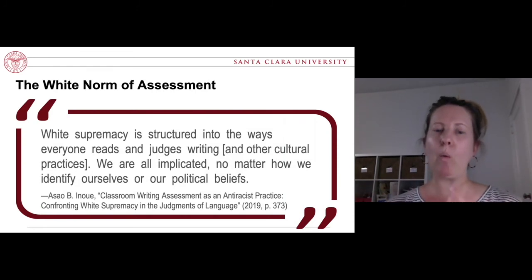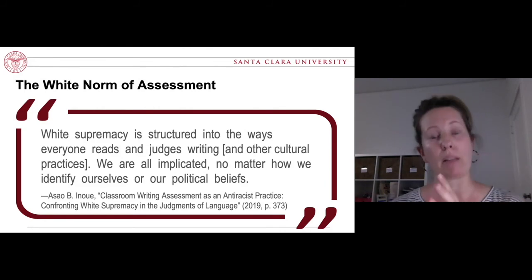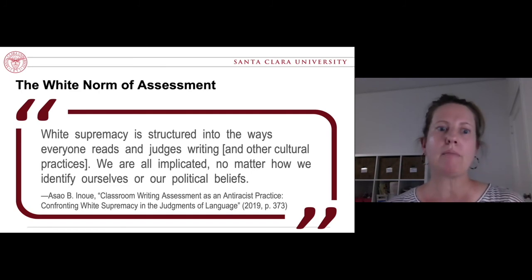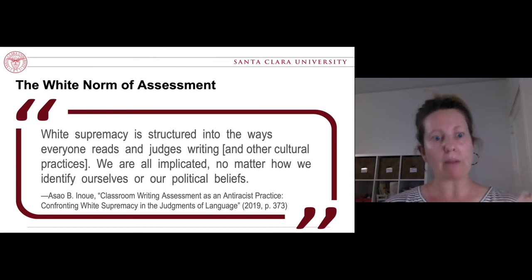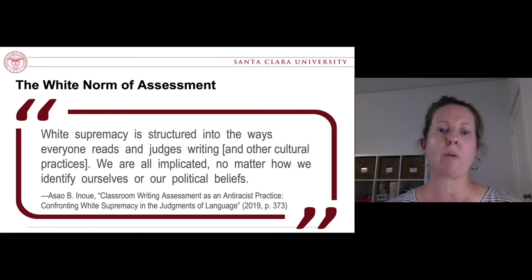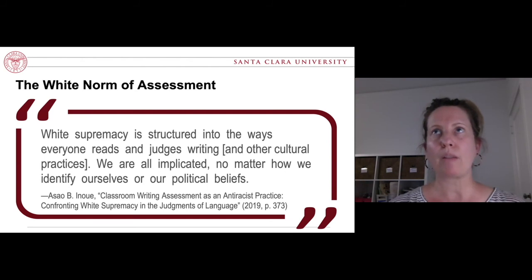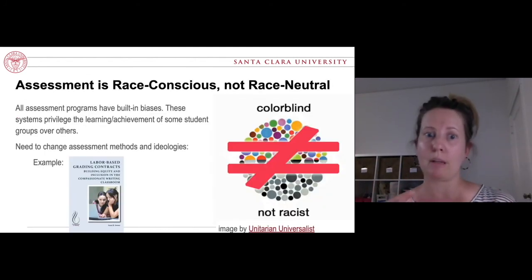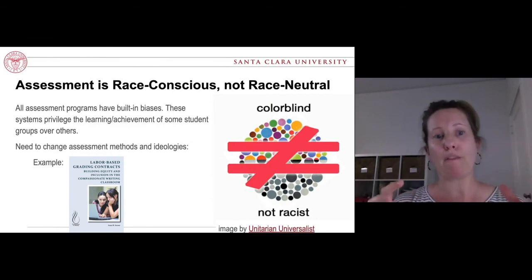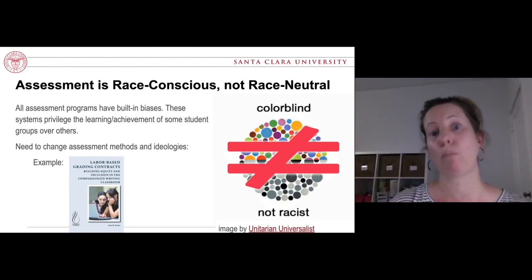To frame the conclusions we have drawn in our study: assessment functions according to a white norm. Asao Inoue, in his piece 'Classroom Writing Assessment as an Anti-Racist Practice,' spells this out clearly: 'White supremacy is structured into the ways everyone reads and judges writing. We are all implicated no matter how we identify ourselves or our political beliefs.' One of the things we've been thinking about in our work is how to deconstruct that aspect of assessment — how to be really self-aware about the fact that assessment is race-conscious rather than race-neutral, and how to use information from our students to make it more equitable.